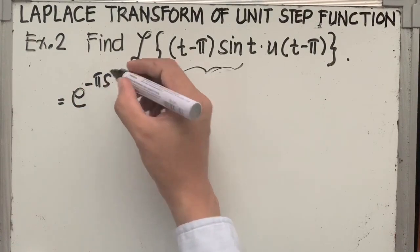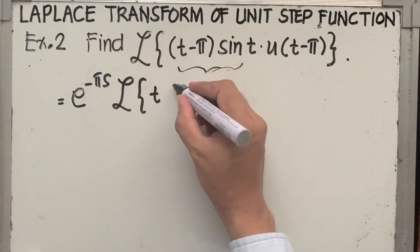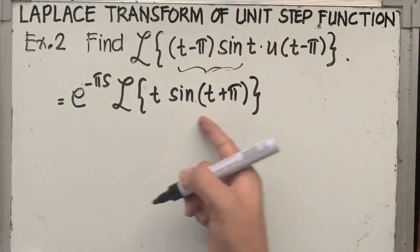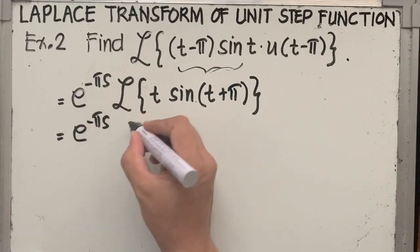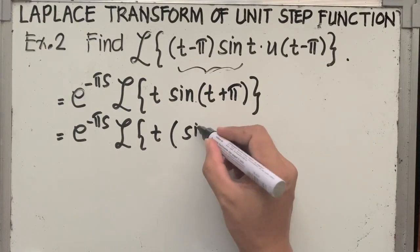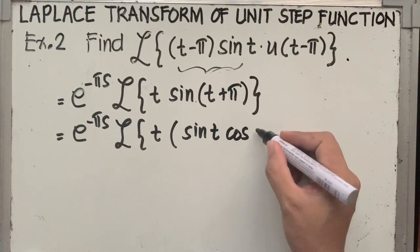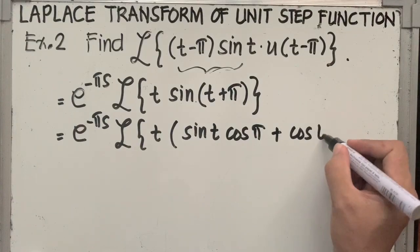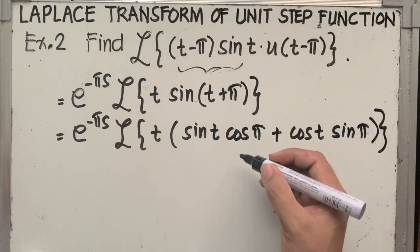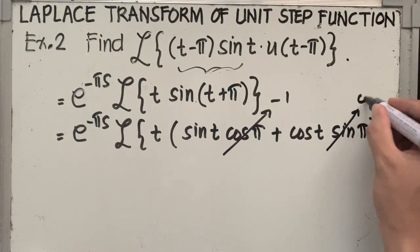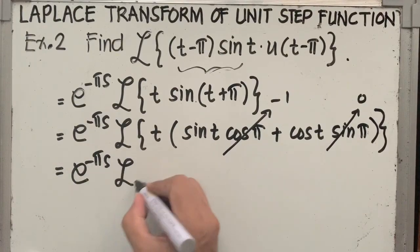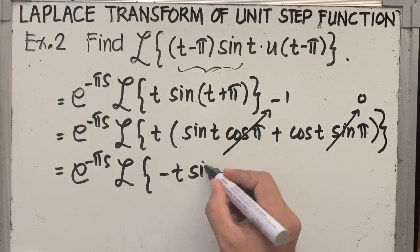We rewrite: e raised to minus pi s times the Laplace of t sine of t plus pi. We know that sine of t plus pi has a trigonometric identity, so we replace it: sine of t plus pi is equivalent to sine of t cosine of pi plus cosine of t sine of pi. Cosine of pi equals negative 1, and sine of pi equals 0. Therefore, the resulting expression is e raised to minus pi s times the Laplace of negative t sine of t.